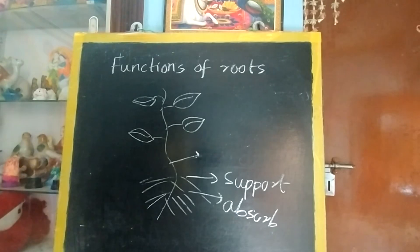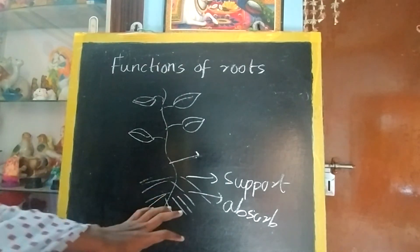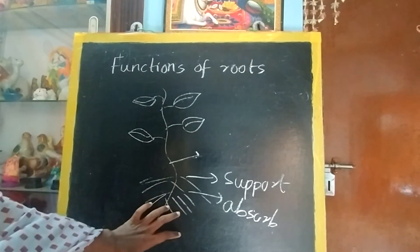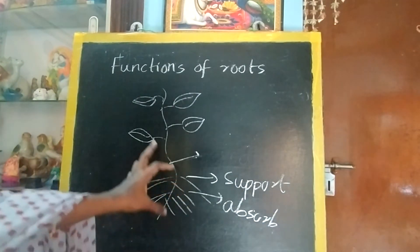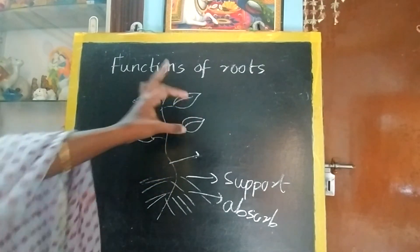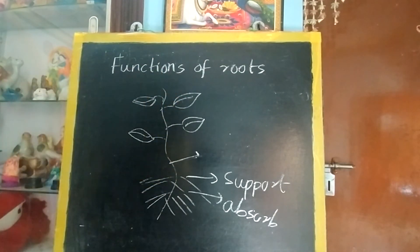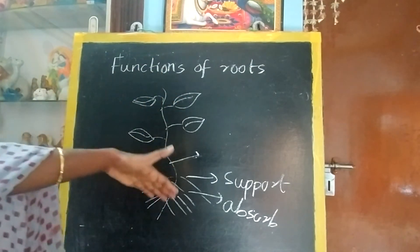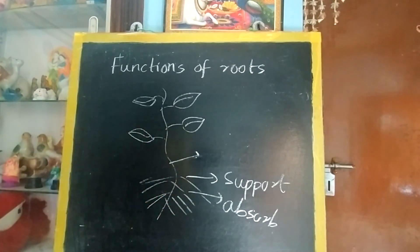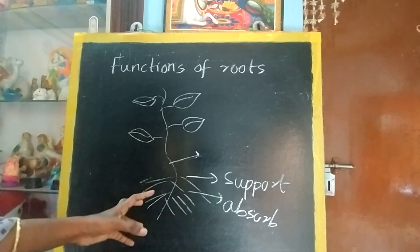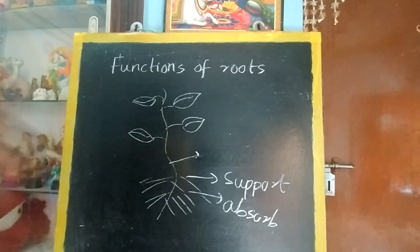This root will absorb the water and nutrients also. From the soil, the soil will have some nutrients — that also it will absorb, and it will pass to all the parts of the plant. That's why the plant can grow. Even though the root is under the soil, it is doing so many works. You can see the root will be dark brown in color because it is mixed with the soil.